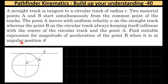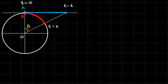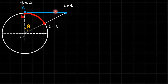Find a suitable expression for the magnitude of acceleration of point B when it is at angular position theta. So let me make a diagram — this is the circular track and this is the straight track. At t = 0, A and B start moving from the common point: A with uniform velocity u along the straight track, and B along the circular track such that when A reaches a position, B is always collinear with A and the center.